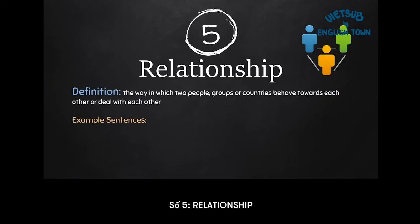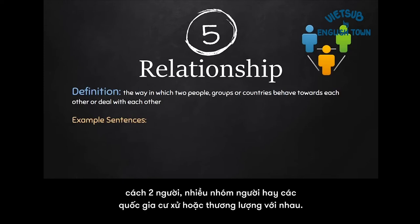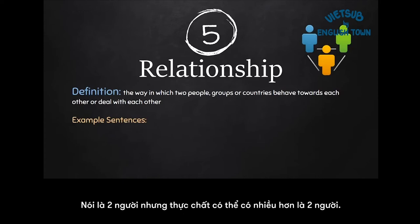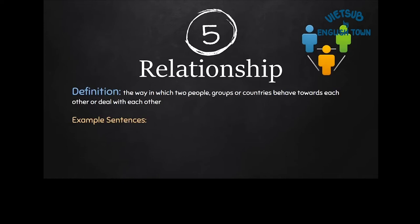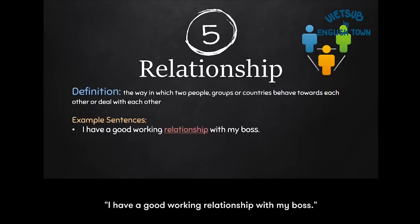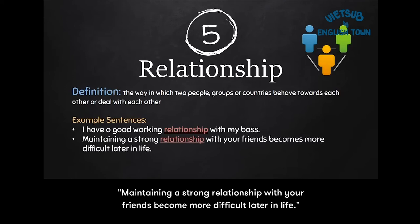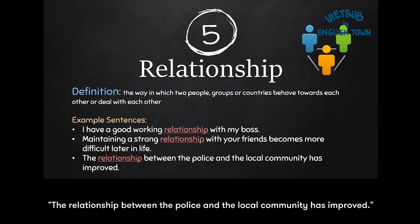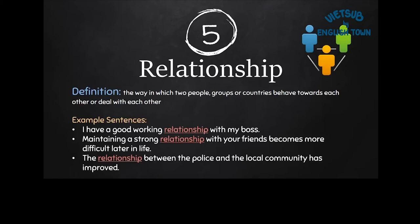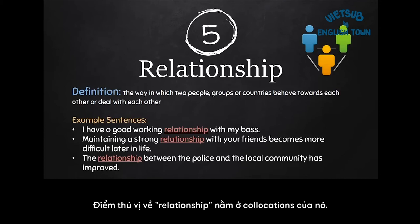Number five: relationship. The definition of relationship is the way in which two people, groups, or countries behave towards each other or deal with each other — and really, a relationship can be more than two people. Example sentences: I have a good working relationship with my boss. Maintaining a strong relationship with your friends becomes more difficult later in life. The relationship between the police and local community has improved.